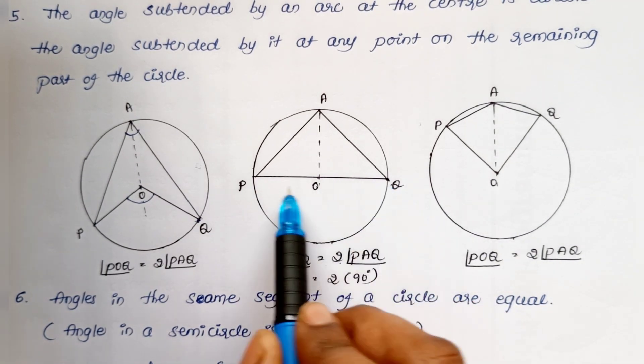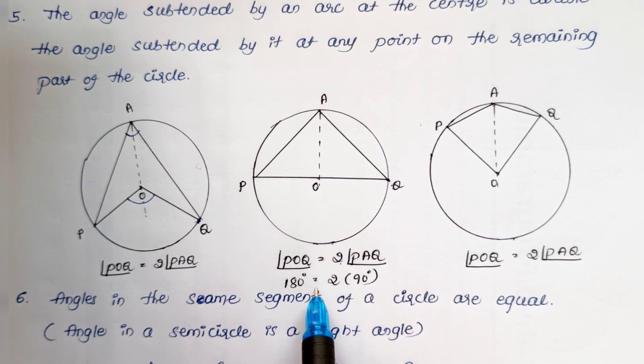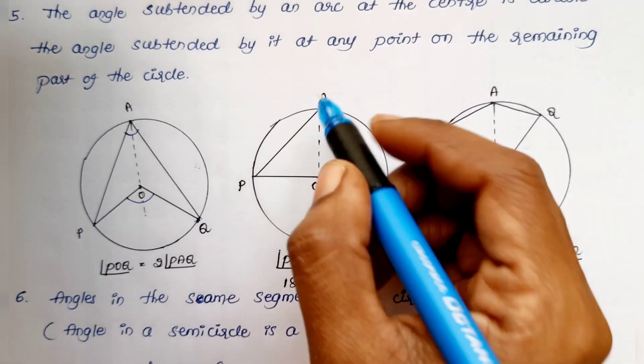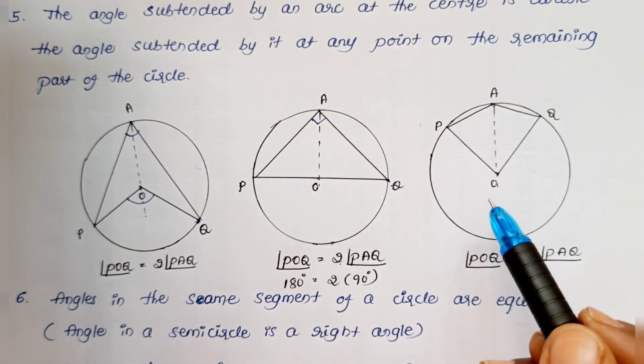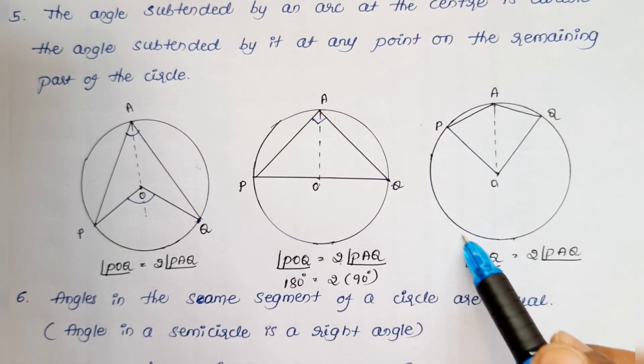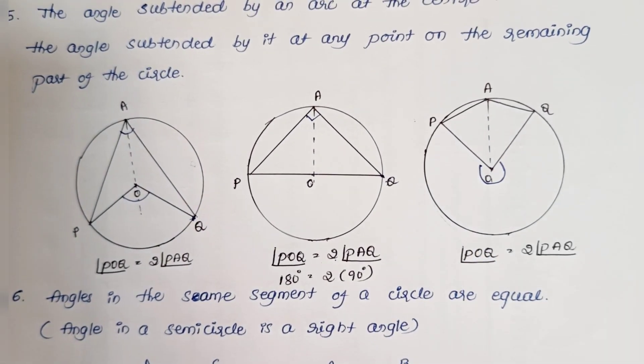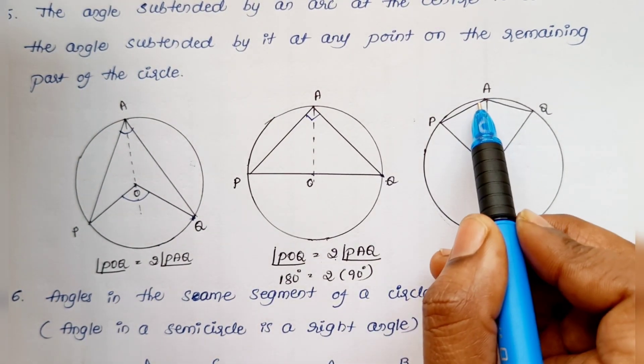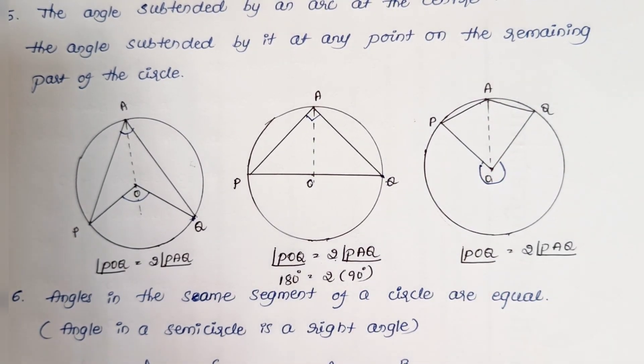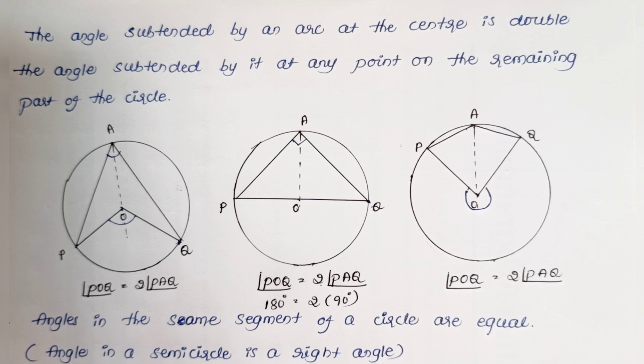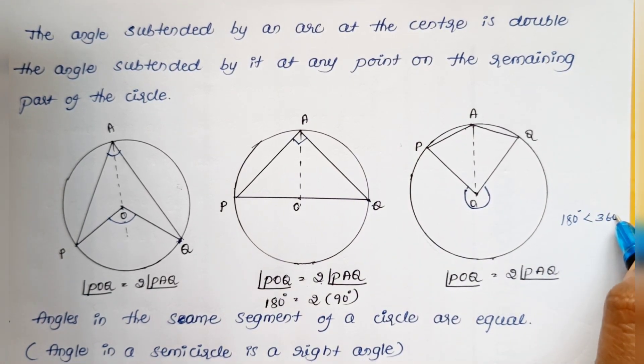When PAQ is on the diameter, the angle is a right angle. Here we have 180 degrees, and this is equal to twice of the right angle formed here. Next case is the major arc. This angle is equal to twice of this angle. This is usually a reflex angle, which is greater than 180 degrees and less than 360 degrees.